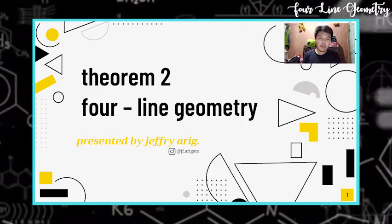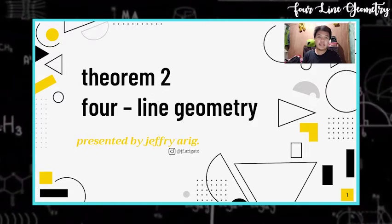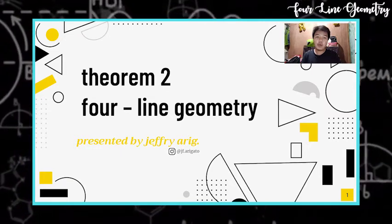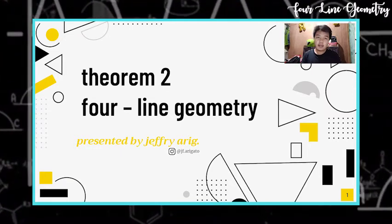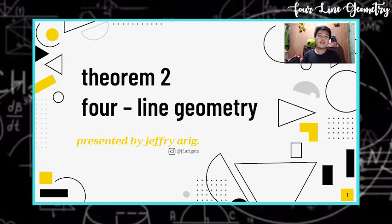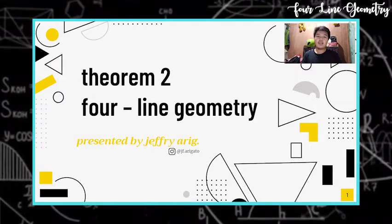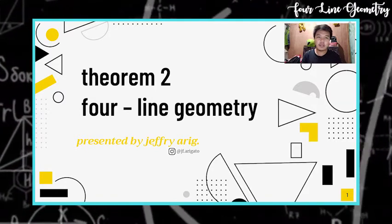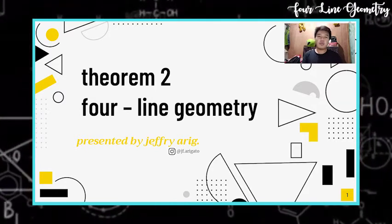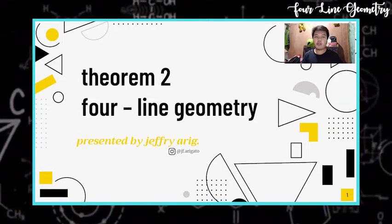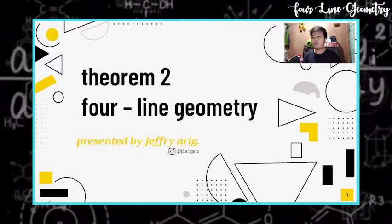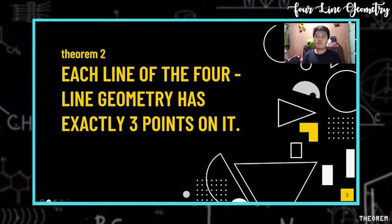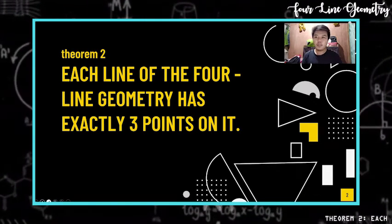Hello, everyone. I'm Jeffrey Arig, BS Mathematics from the University of Southeastern Philippines. Since theorem one of the four-line geometry was already discussed by the previous reporter, I'm going to discuss, explain, and prove theorem two of the four-line geometry: each line of the four-line geometry has exactly three points on it.